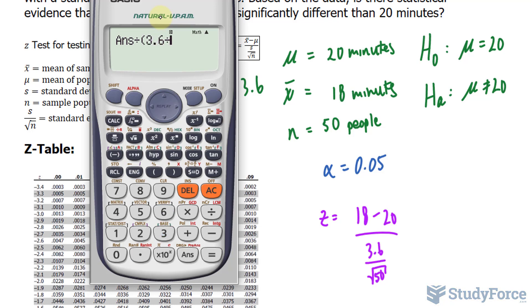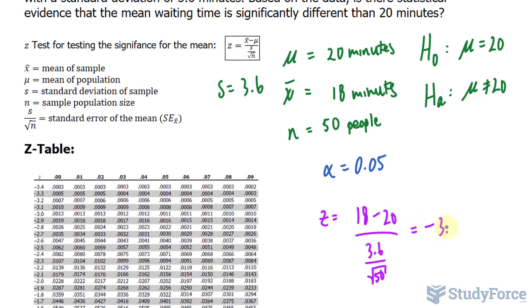divided by, again, the square root of 50. We end up with negative 3.928.